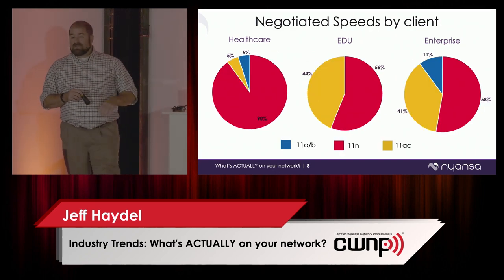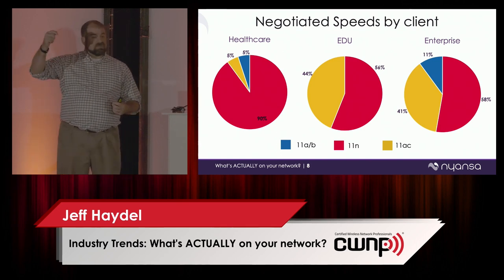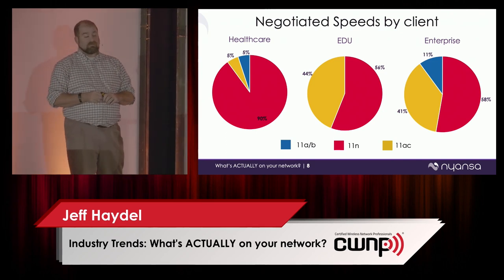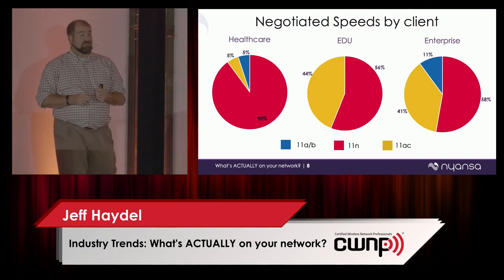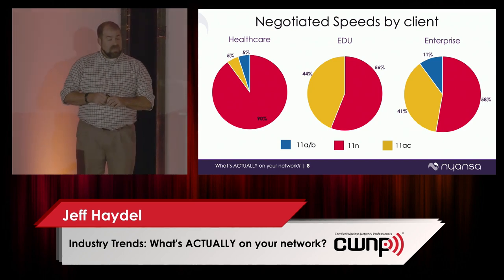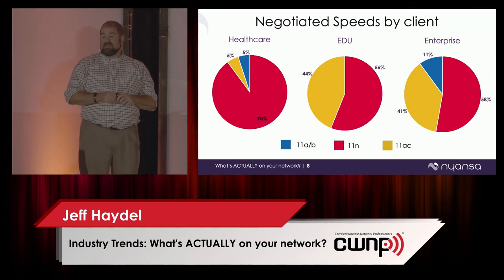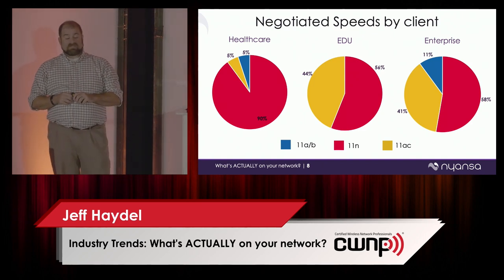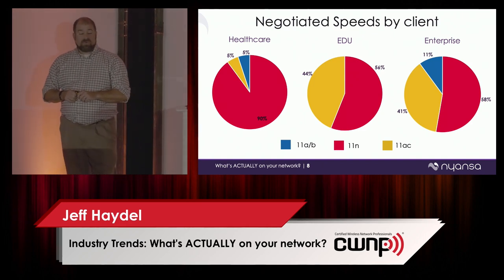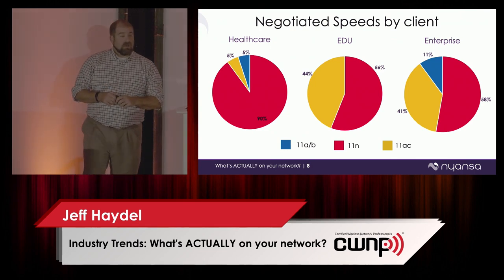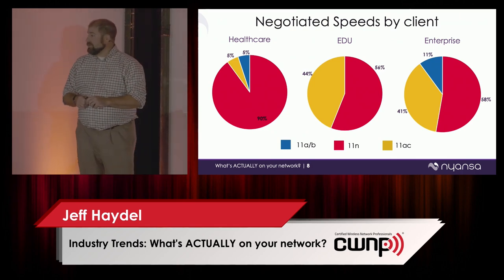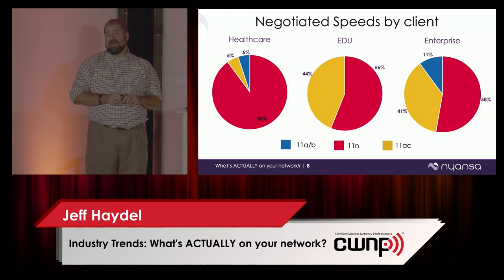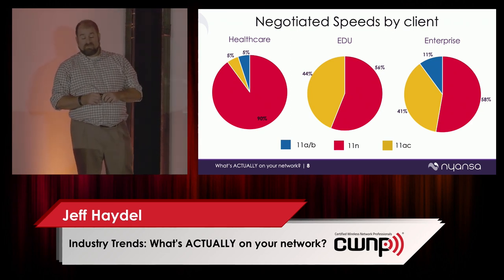What about negotiated speed by client — looking at the maximum speed negotiated so we can understand what a client is capable of? Again, in healthcare, a lot of 802.11n — not a big surprise — with an equal hand of AC versus AB/B. Enterprise is similarly unsurprising. Even in EDU, we can see that education has the biggest collection of AC clients. Higher ed and K-12 are often early adopters; they like to get new stuff, often with funding to help, and we can see that trend playing out.